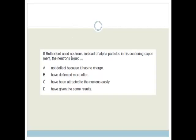If Rutherford used neutrons instead of alpha particles in his scattering experiment, the neutrons would do what? Well, we know that neutrons have no charge. So let's have a look at this. Would they have been attracted to the nucleus easily? No. What was special about Rutherford's experiment was that because he used alpha particles, the particles were actually deflected because of the way the electrons were spaced out and the protons were spaced out in the nucleus. Well, it was basically because of the fact that there was huge space in the atom, so the alpha particles get through.